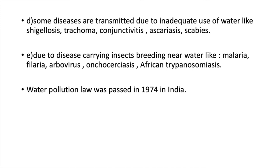While pollution seems to be an inevitable consequence of modern industrialized technology, the problem now is to determine the level of pollution that permits economic and social development without presenting hazards to health. The Water Pollution Law was passed by the Indian Parliament in 1974, which provides for the constitution of central and state water bodies and joint water boards, endowed with wide powers for controlling water pollution.